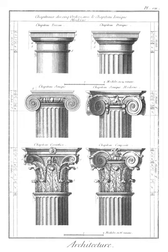Dipteral: temples which have a double range of columns in the peristyle, as in the temple of Diana at Cephasus.